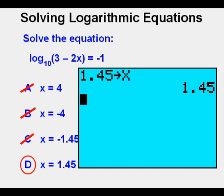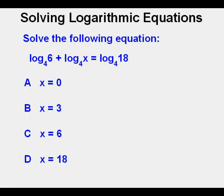One last way is to solve by substitution. Press 1.45 then the STO or storage key then the X key then enter. Then enter the log base 10 of quantity 3 minus 2x and you should know that the log key on the calculator means log base 10. Press enter. We get negative 1 showing again that D is the correct answer.